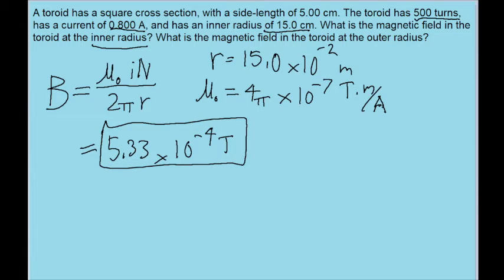The problem also asks about the case for the outer radius. Now the problem doesn't give us the outer radius of the torus directly, but it's easy enough to figure out. Because we're given the inner radius of 15 centimeters, and the problem also gives us the side length of the torus itself as 5 centimeters, the outer radius is just 20 centimeters because we add that 5 centimeters to the 15 centimeters of the inner radius.